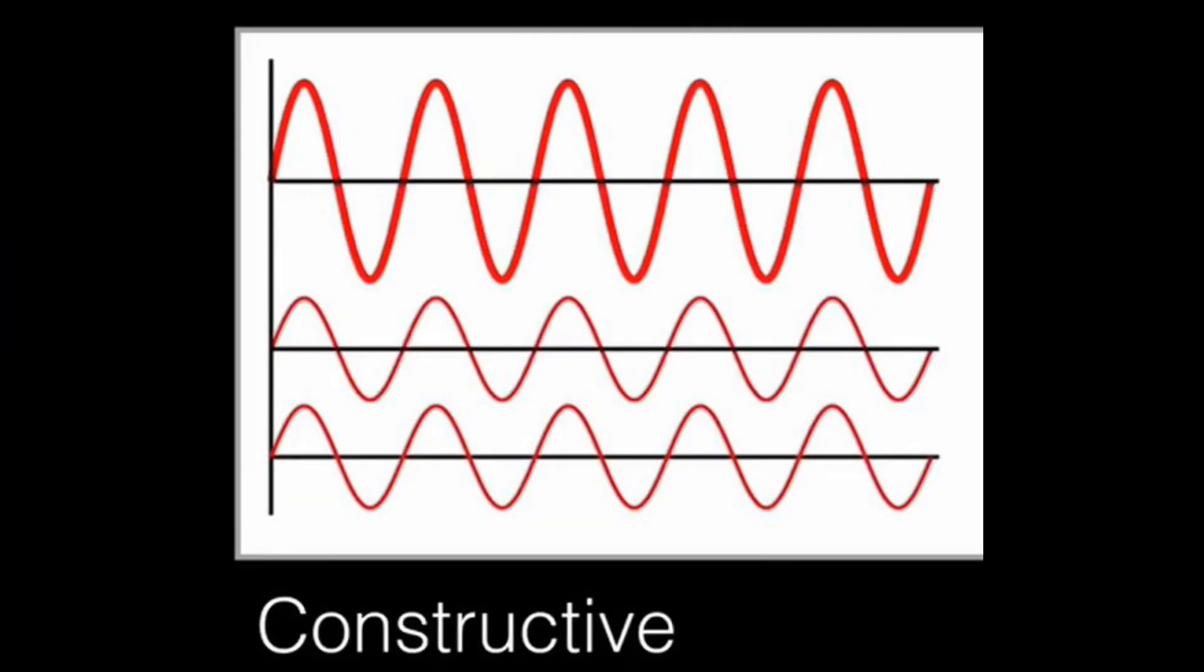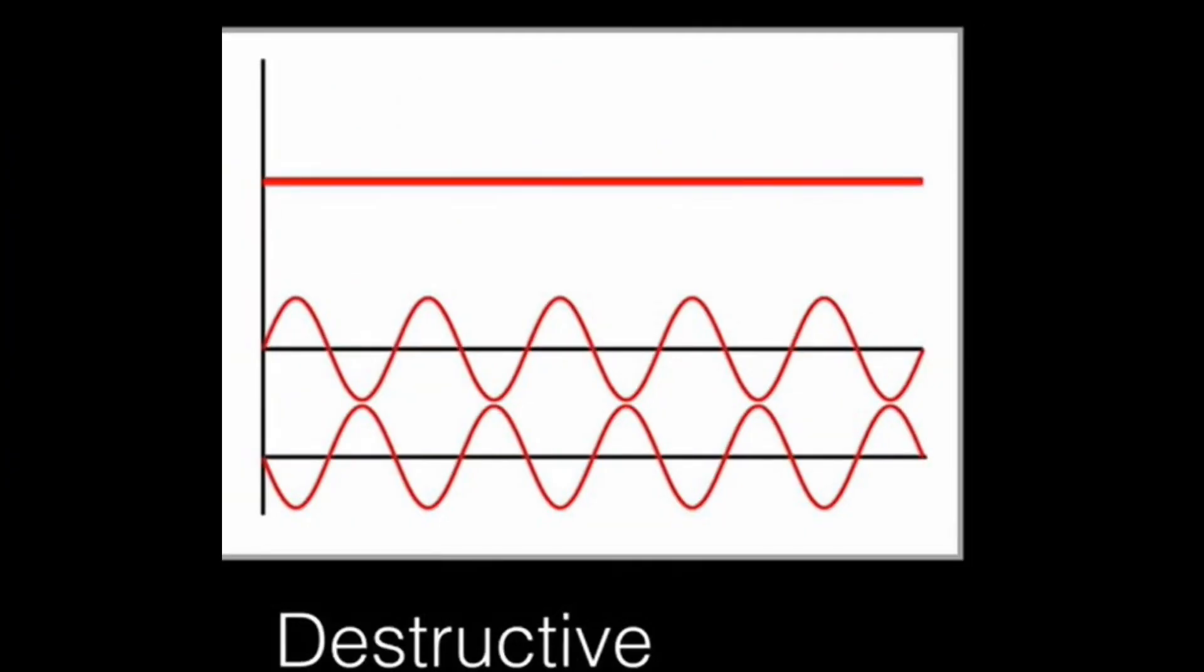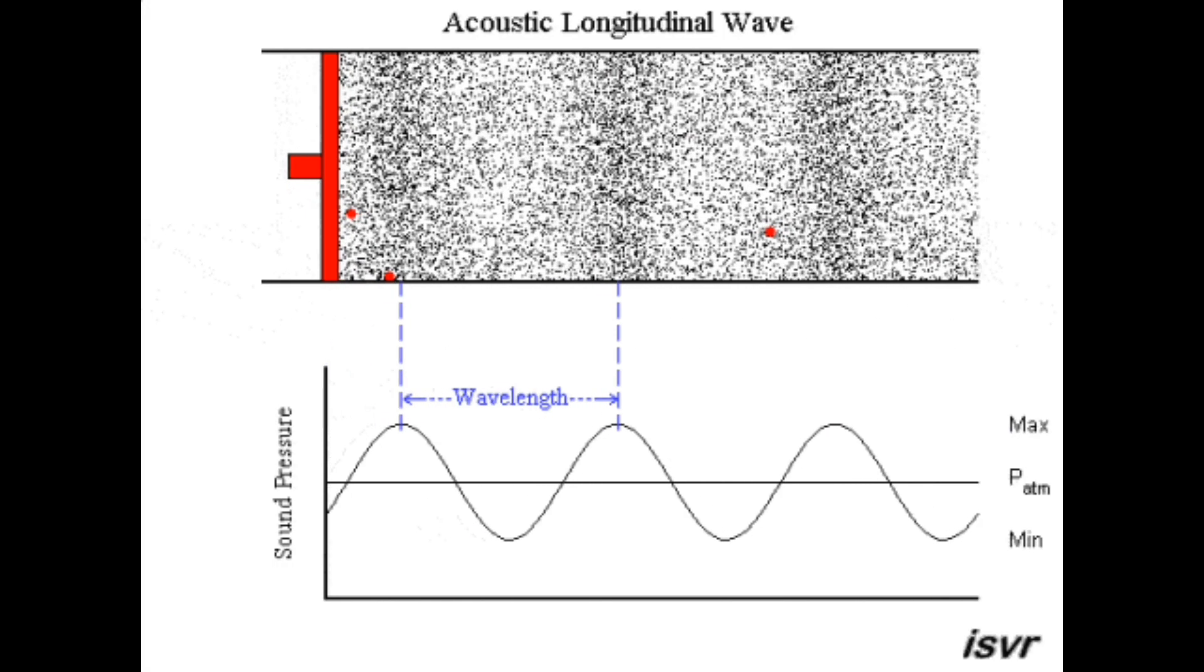Conversely, destructive interference happens when the peaks of the waves cancel each other out, leading to dark regions.